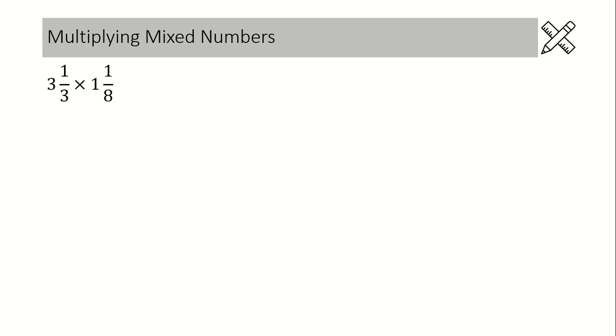The main thing you need to know about multiplying mixed numbers is that you cannot multiply mixed numbers. What you have to do is convert any mixed number to an improper fraction. Here's how we show our work. We're going to take this first fraction of 3 and 1 third and convert it to an improper fraction.